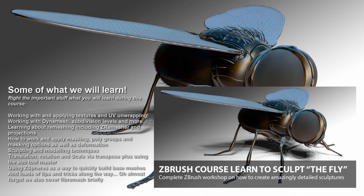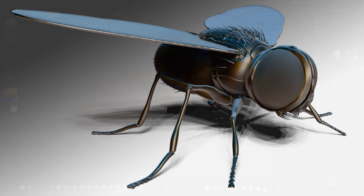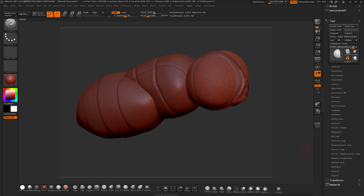subdivision levels, remeshing including ZRemesher and projections, how to work with and apply masks, polygroups and masking options, as well as deformations, sculpting and modeling techniques, translation, rotation and scale via Transpose, using the Subtool Master, using ZSpheres as a way to build up the mesh quickly, loads of tips and tricks, and we'll also be covering FiberMesh. It's a very packed course, so be prepared to learn a lot in quite a short space of time.